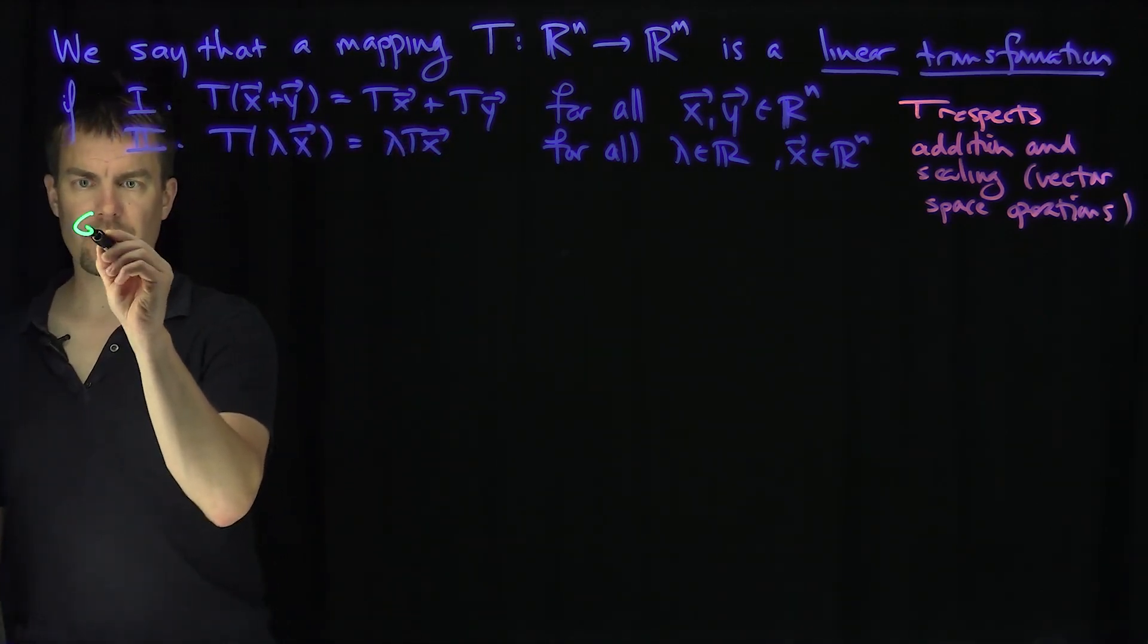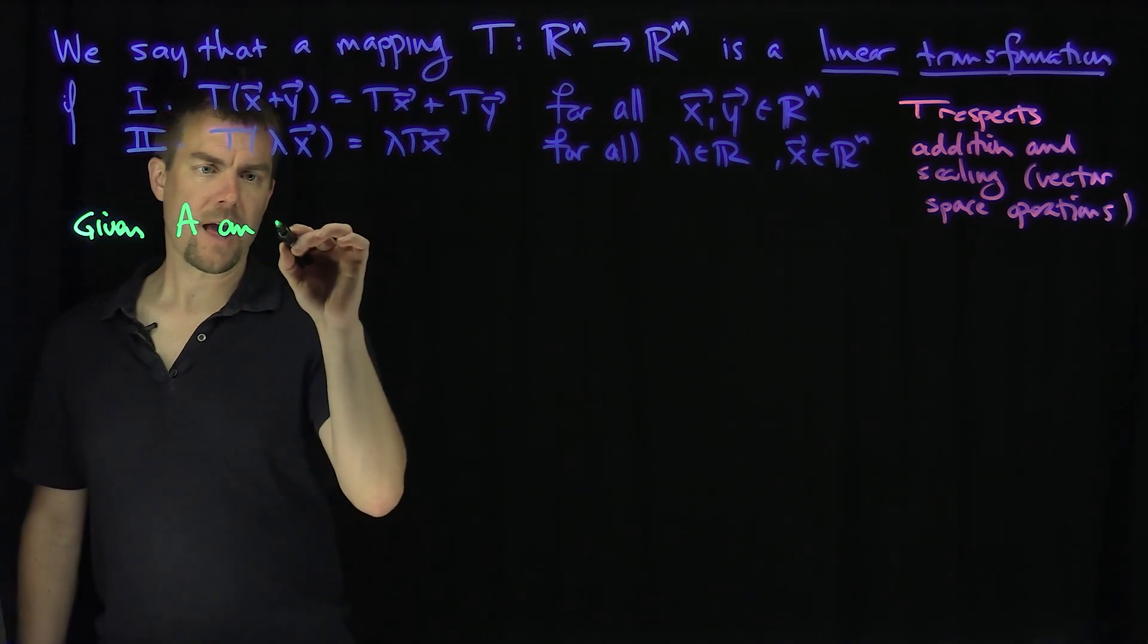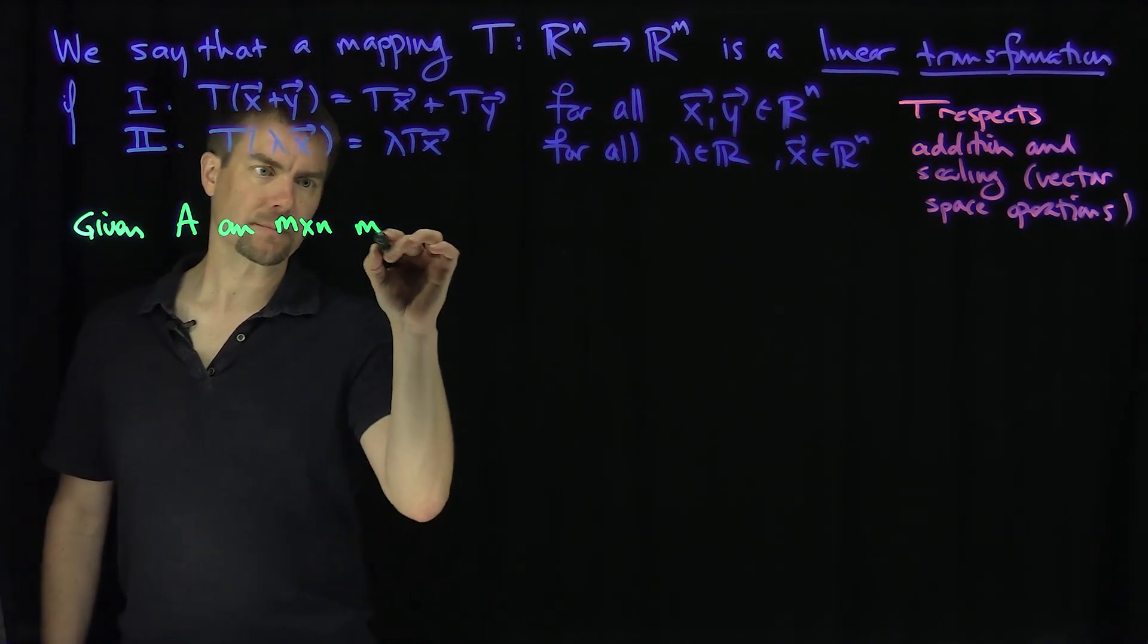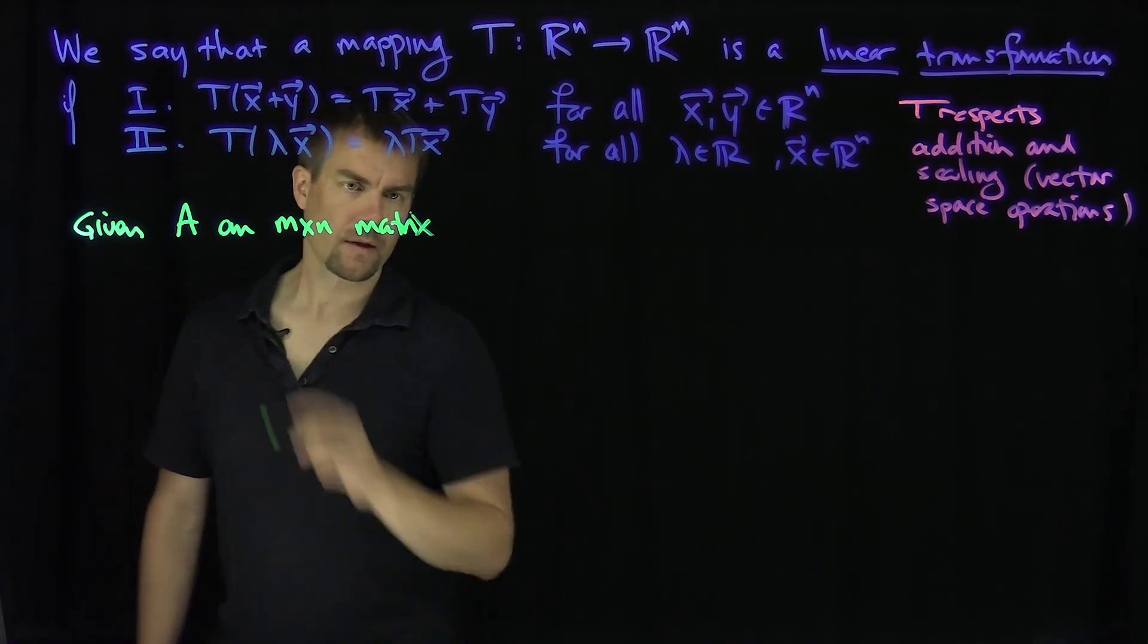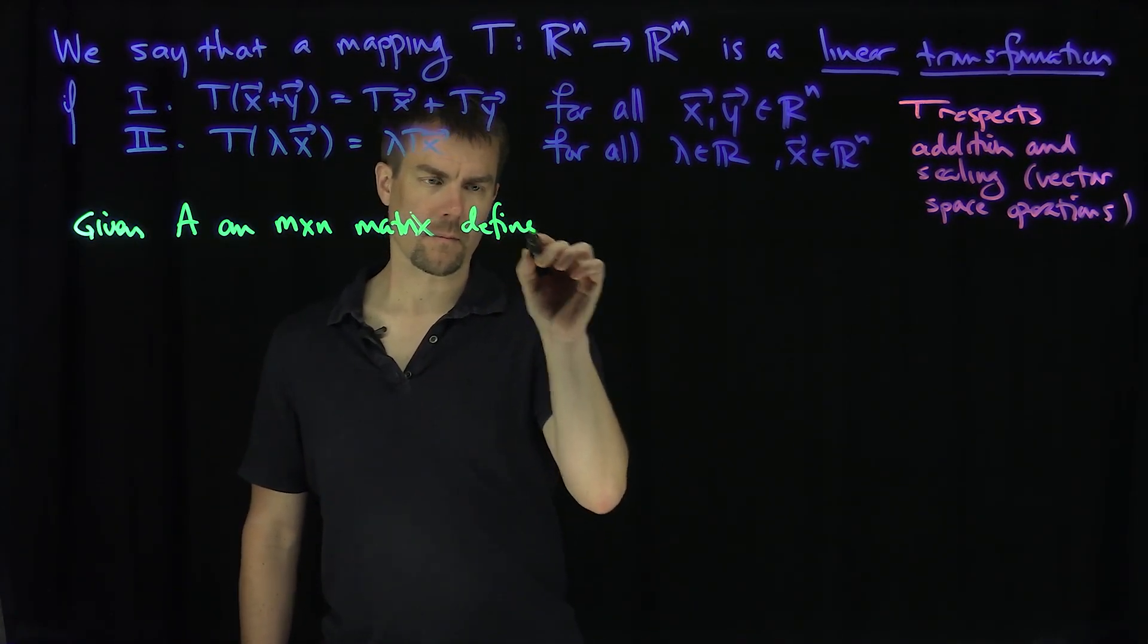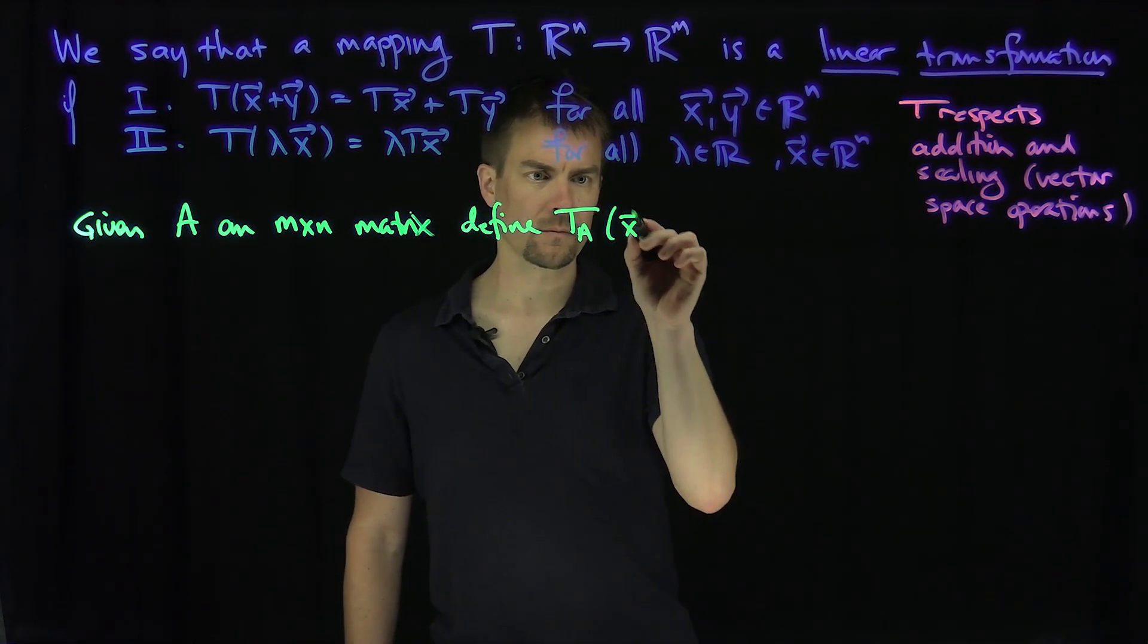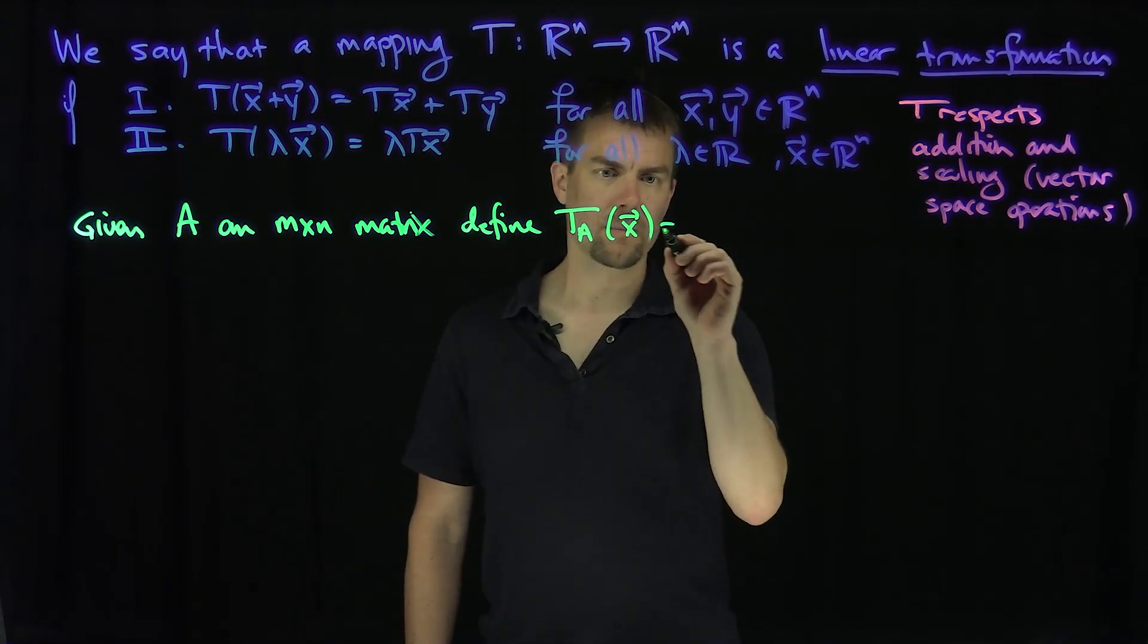And so if I'm given, so given A an M by N matrix, define T sub A of x to be A x.